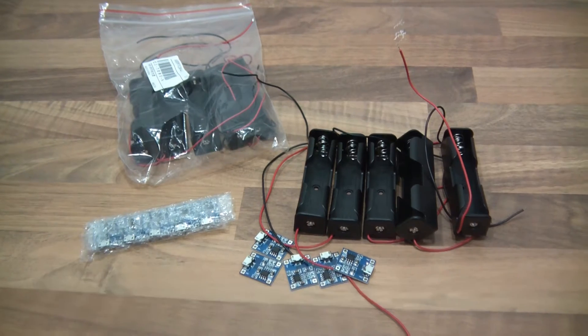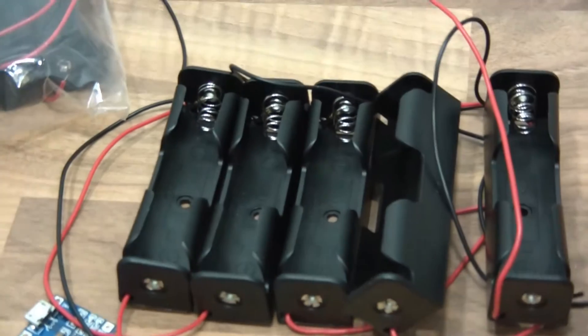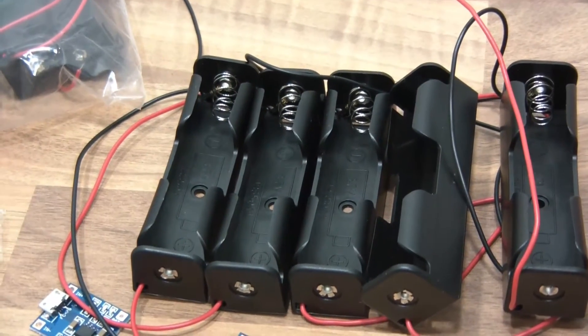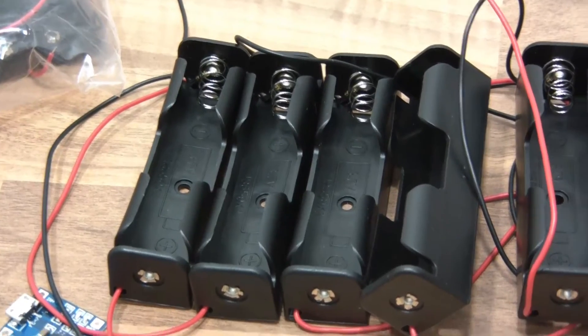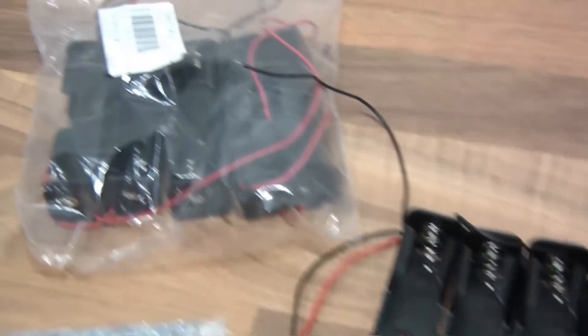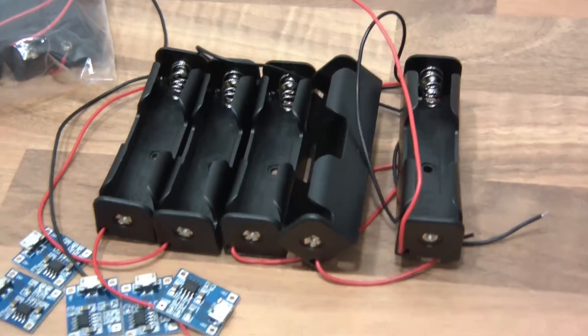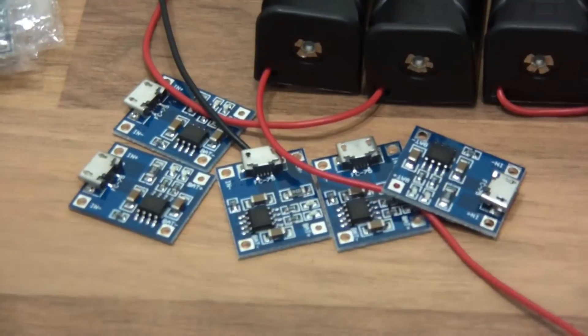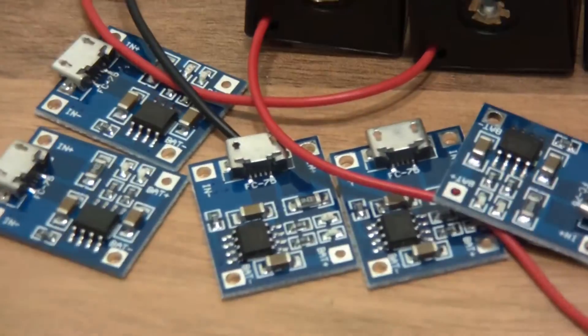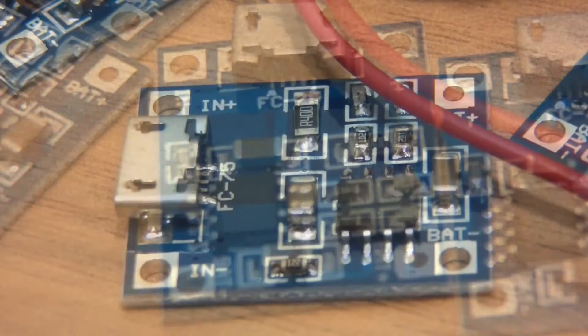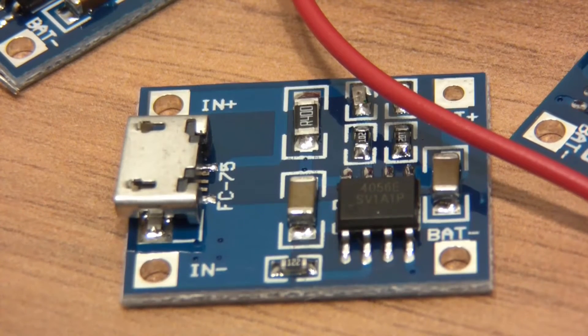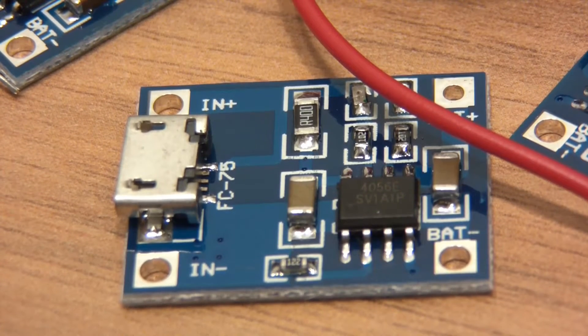So this is what I've bought up to now. I've got these cell holders I suppose they're called, for 18650 cells. I've actually got ten of those, five there and five here. And I've also got these little charger boards for 3.6 volt cells. I'll just zoom into these for you.